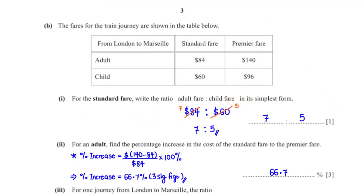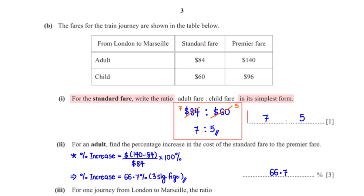The fares for the train journey are shown in the table. For the standard fare, write the ratio adult fare to child fare in its simplest form. The standard adult fare to the standard children fare is $84 to $60. The HCF for 84 and 60 is 12. 12 goes into 84 seven times, and 12 goes into 60 five times. So our final answer is 7 to 5.